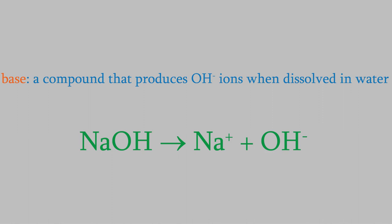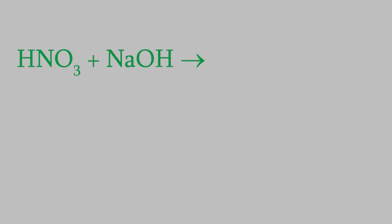So now let's get back to actual acid-base reactions. Suppose we combine an acid and a base — for example, nitric acid and sodium hydroxide. You might remember that many chemical reactions are double displacements, meaning the cations in the two reactants switch places. The acid-base reactions in this chapter will all be double displacements. The cation in nitric acid is H+, and the cation in sodium hydroxide is sodium, so the hydrogen pairs up with the hydroxide, and the sodium pairs up with the nitrate.